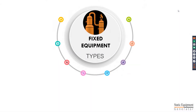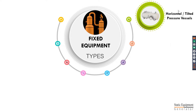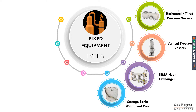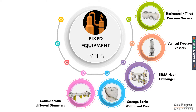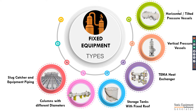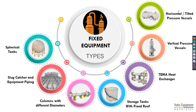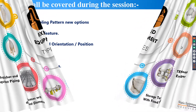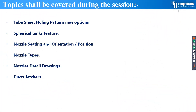As mentioned in the SCG promo video, SCG software can do horizontal pressure vessels, vertical pressure vessels, TEMA heat exchangers, storage tanks with fixed roof, columns with multi-sectional sections and different diameters, slug catcher finger type, spherical tanks, and ducts. During this webinar we will discuss tube sheet holing pattern new options, spherical tanks features, nozzle seating and orientation, nozzle types, nozzle detailing, and duct features.